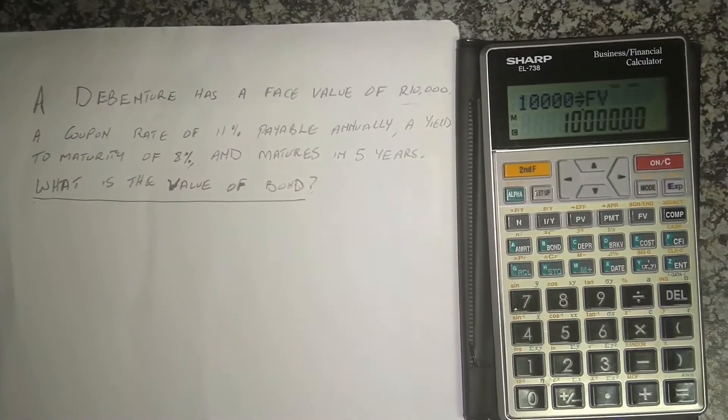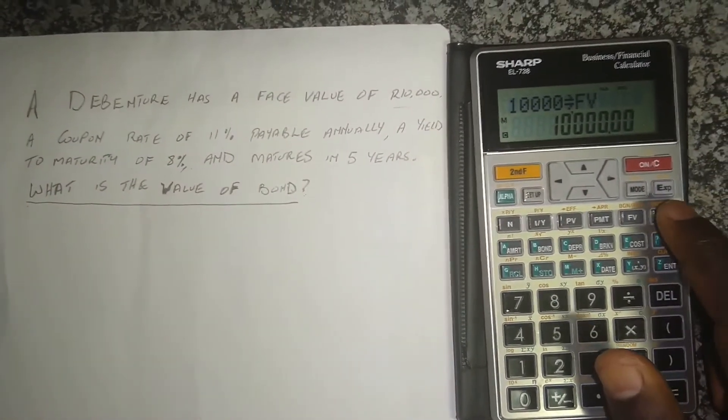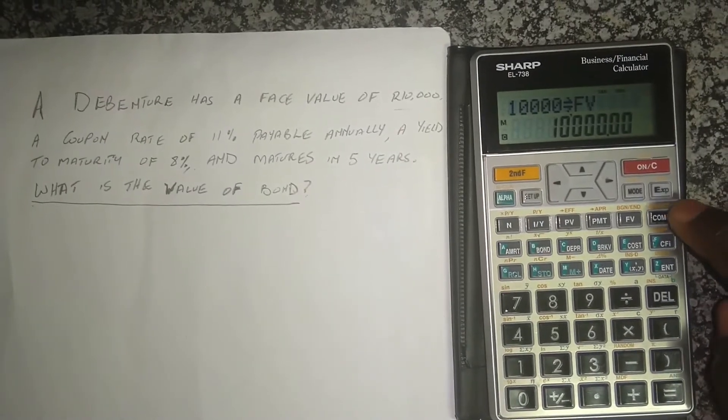And we have inputted all the information that we needed to do. Now what we need to do, we need to compute. So you press where it's written COMP, press there, and then you compute present value.